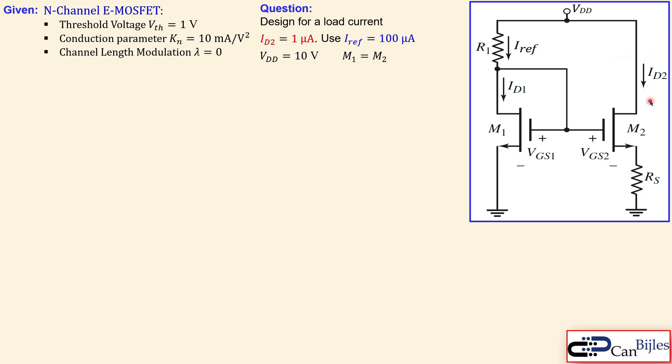We would like to design for a load current which is ID2 of one microamp. So again, a low current. That's actually the purpose of the Widlar current source, and we will use for that the reference current here of 100 microamps.